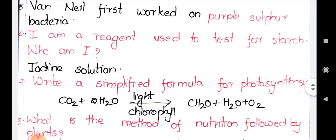The next question is: write a simplified formula for photosynthesis. The formula for photosynthesis was given in a simplified manner by Van Niel. In the equation: carbon dioxide plus two molecules of water, in the presence of light and chlorophyll, will synthesize a carbohydrate molecule, and water and O₂ will be released. The presence of light and chlorophyll is very important because without these two, there will be no photosynthesis occurring.